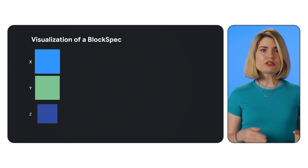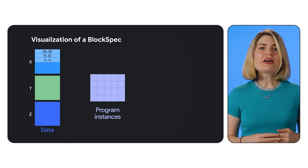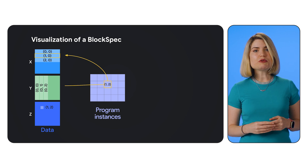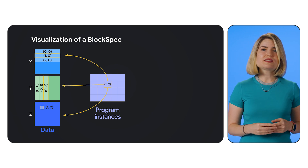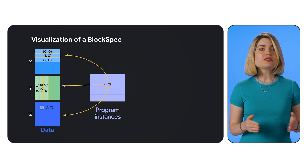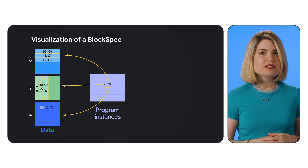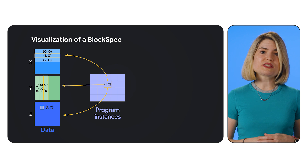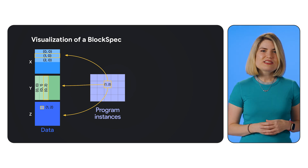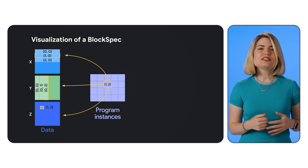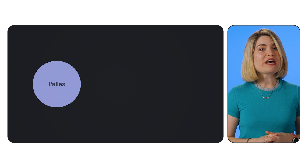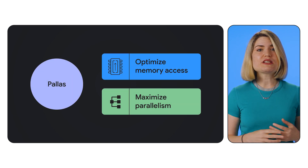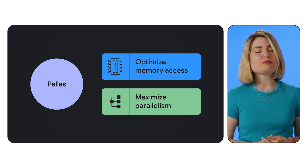For larger arrays that don't fit in fast on-chip memory, Pallas uses grids to divide the computation. A grid is simply a multi-dimensional array of execution instances, and each instance runs your kernel. Pallas also provides block spec, which lets you define how to split your input arrays into blocks for efficient processing by each grid instance. Think of it as slicing your data into bite-sized chunks — this is where Pallas really shines, allowing you to optimize memory access and maximize parallelism for complex tasks like matrix multiplication.